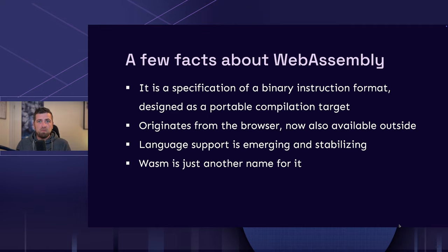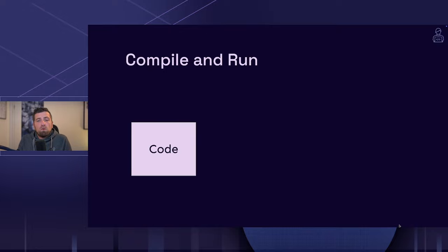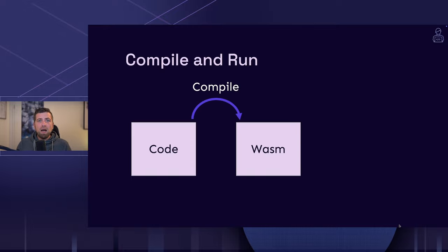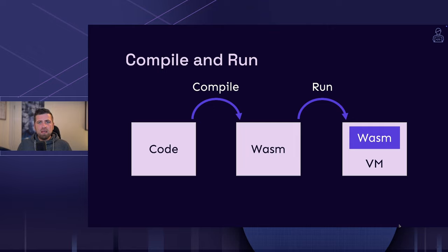And the answer is fairly simple. We start by writing our code, then we use the language-specific toolchain — like the compiler — and compile it down to the WebAssembly platform. With the WebAssembly module in place, we can take that module and run it on a WebAssembly virtual machine. Those virtual machines are often called runtimes.